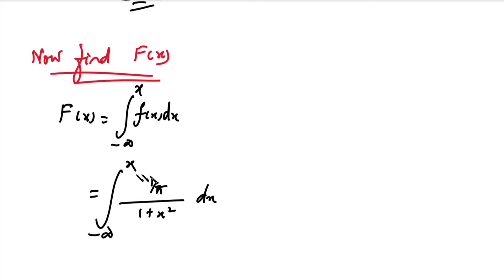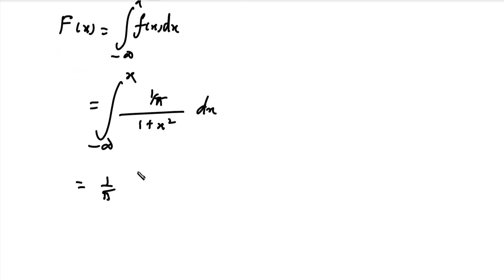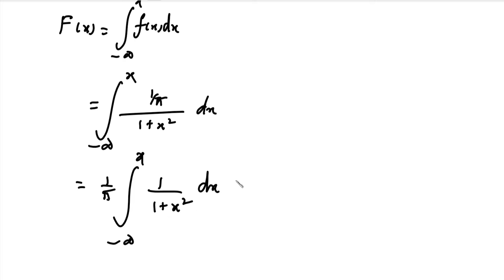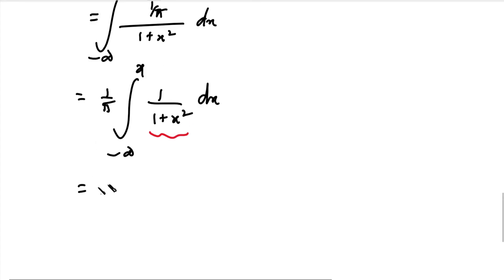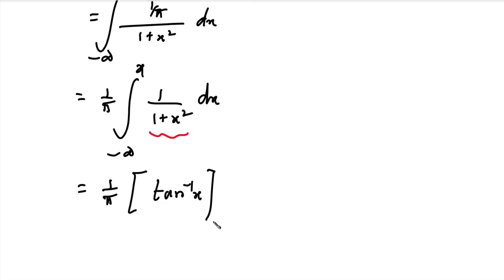Taking 1/pi outside the integral, we get 1/pi times the integral from minus infinity to x of 1 divided by (1 plus x squared) dx. We already know that the integral of 1 by (1 plus x squared) is tan inverse x. So this equals 1 divided by pi, times tan inverse x, with limits minus infinity to x.